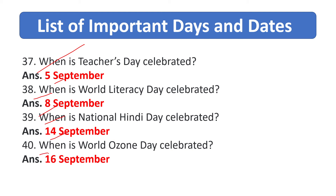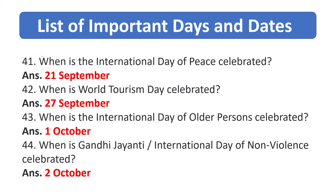When is World Ozone Day celebrated? 16th September. When is the International Day of Peace celebrated? 21st September. When is World Tourism Day celebrated? 27th September.